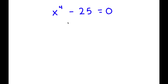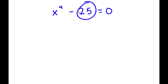So in this problem, I have x to the power of 4 minus 25 is equal to 0. To solve this, I'm going to first rewrite 25 as 5 squared. So now I have x to the power of 4 minus 5 squared is equal to 0.